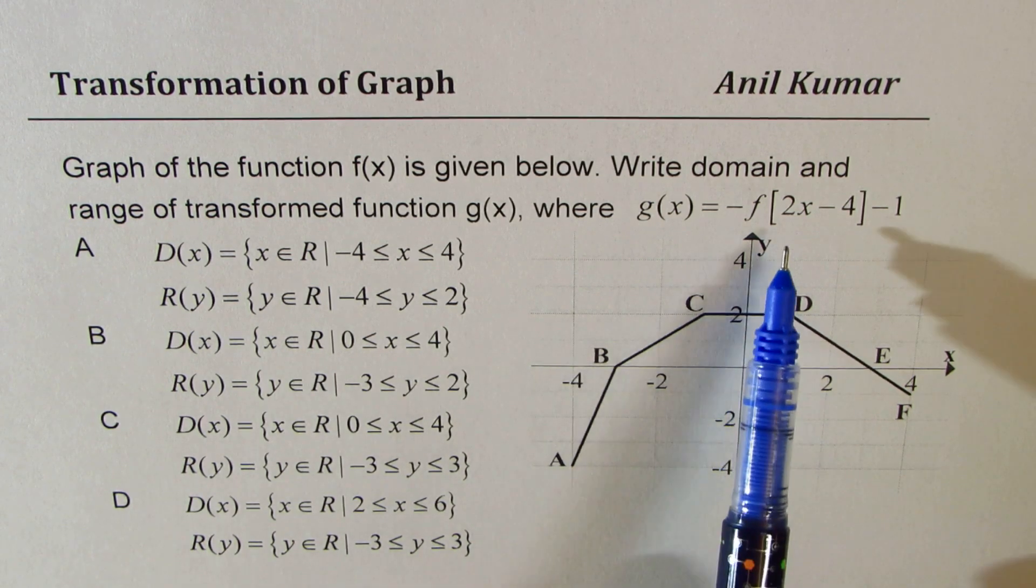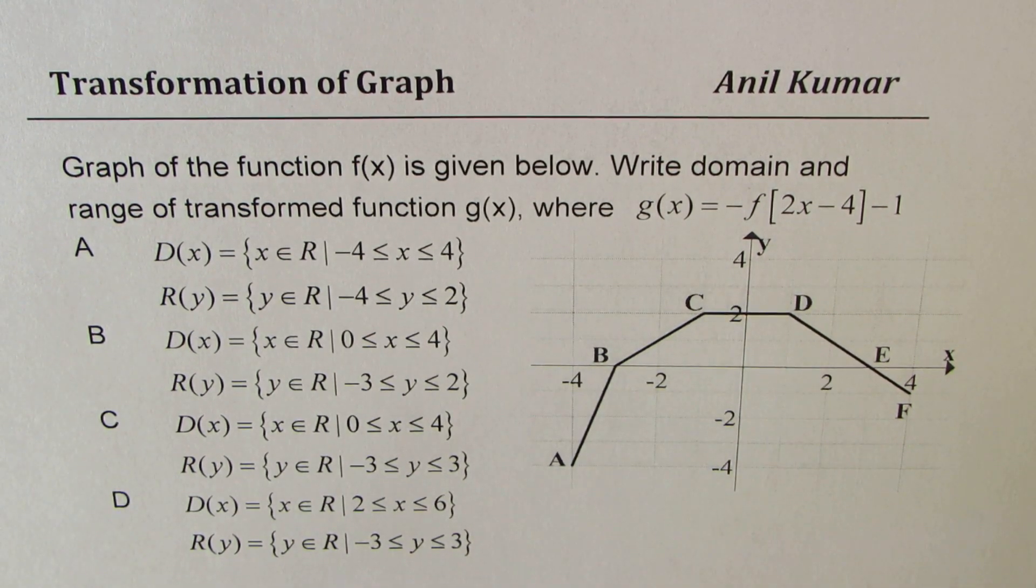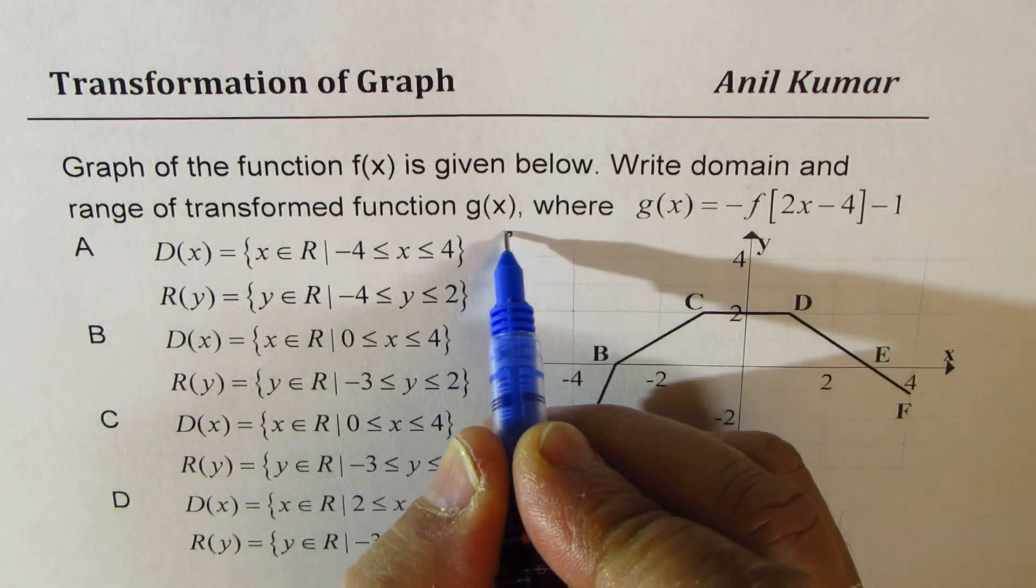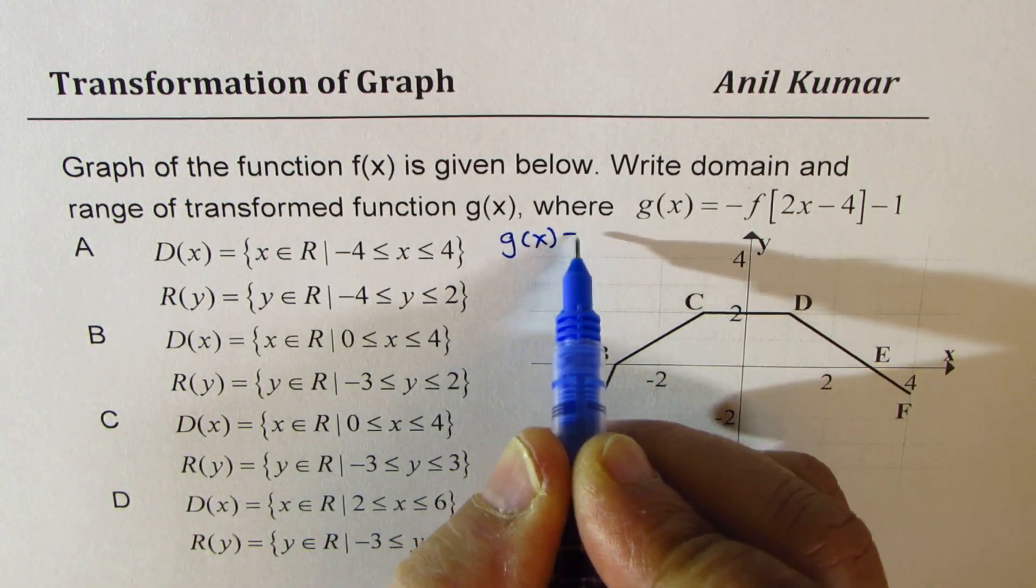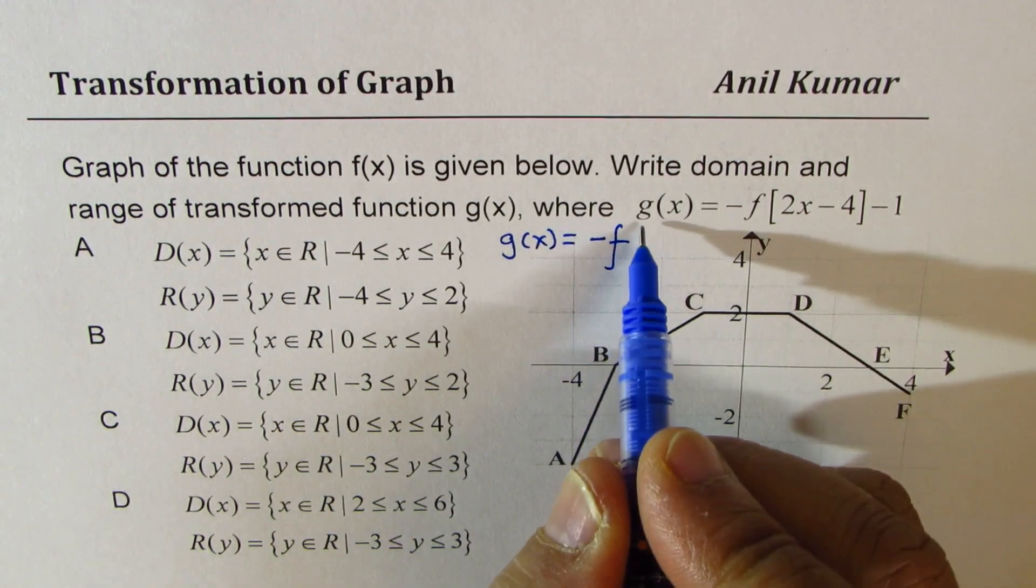We should first factor 2 and then look into the transformation and thereafter get the domain and range. So let me rewrite g of x as equal to minus f of, we'll factor 2,